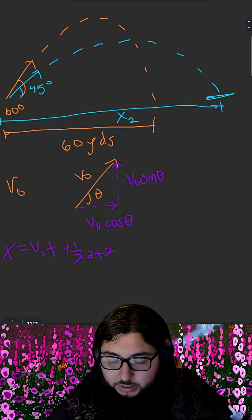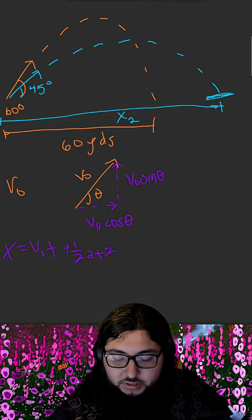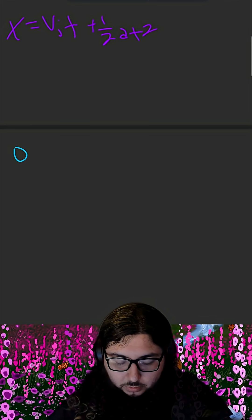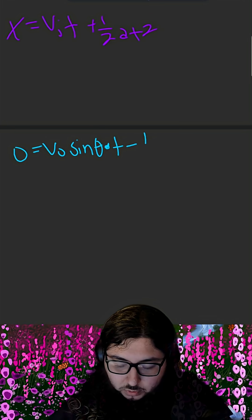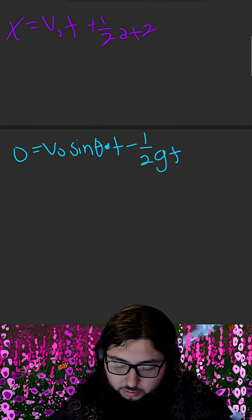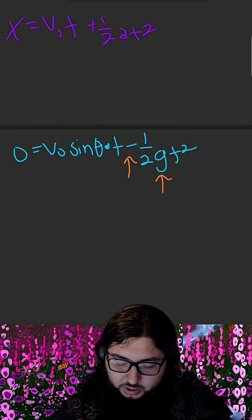When the ball reaches the ground, right here, it'll be at a height that we'll consider 0. So our equation will be 0 is equal to v naught sine of theta for the vertical component of our velocity, minus 1 half g t squared. This minus comes from the downward acceleration of gravity.